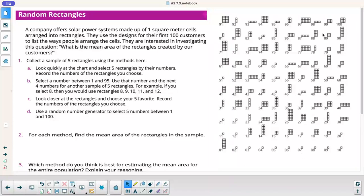Next thing, we got this little graphic over here on the right. A bunch of little grids of squares. The company offers solar power systems made up of one square meter cells arranged into rectangles. They use the designs for their first hundred customers to list the ways people arrange the cells. They are interested in investigating this question: What is the mean area of the rectangles created by our customers? Collect a sample of five rectangles using the methods here. Let's start with A. Look quickly at the chart and select five rectangles by their numbers. Record the numbers of the rectangles you choose. I'm going to just kind of randomly touch five of these. I got 86, 78, 66, 74, and 54.